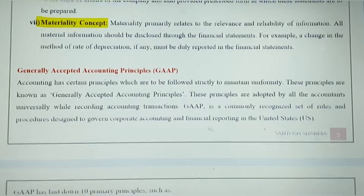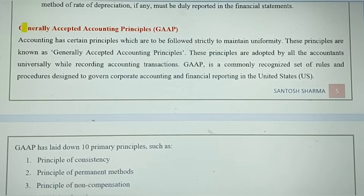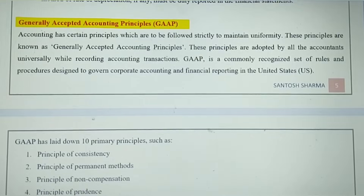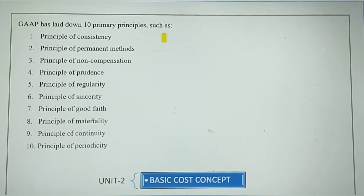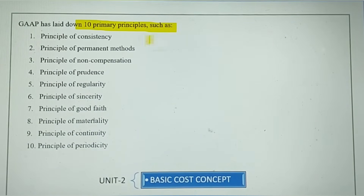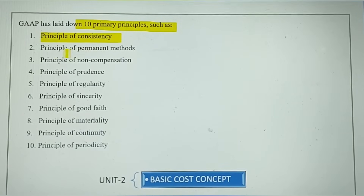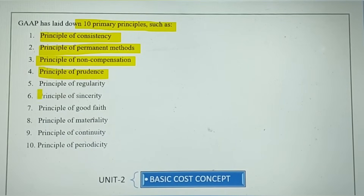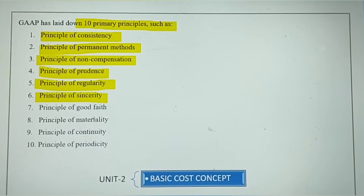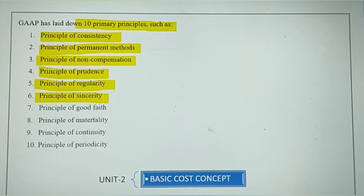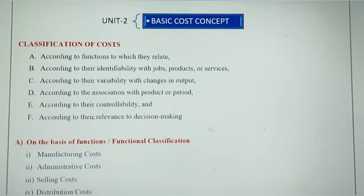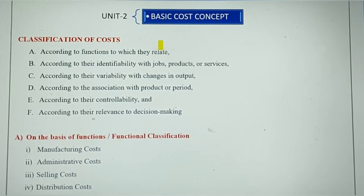You can get a short note on GAAP. These are accounting principles followed all over the world, and there are 10 main principles on which GAAP is created: principle of consistency, principle of permanent methods, principle of non-compensation, principle of prudence, principle of regularity, principle of sincerity, and others. These are all derived from the same accounting concepts we just covered. Now let's move to Unit 2 — Basic Cost Concepts.